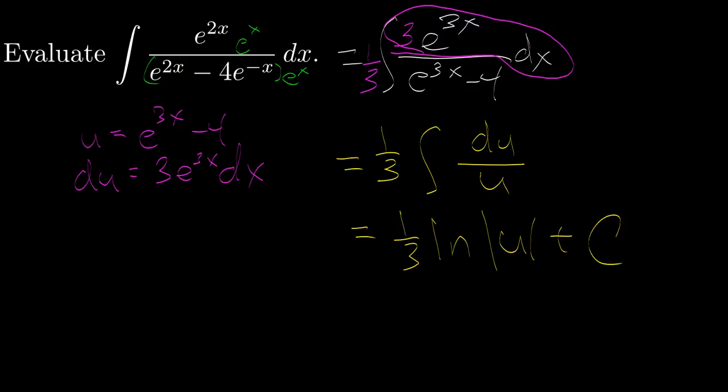And I anti-differentiate using the natural log of the absolute value of u. And then finally, rewriting my expression in terms of my original variable, I have 1 third times the natural log of the absolute value of e to the 3x minus 4 plus an arbitrary constant C.